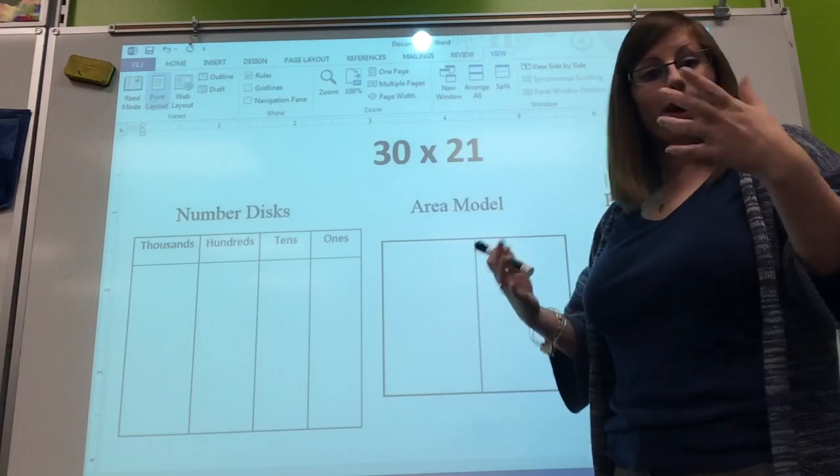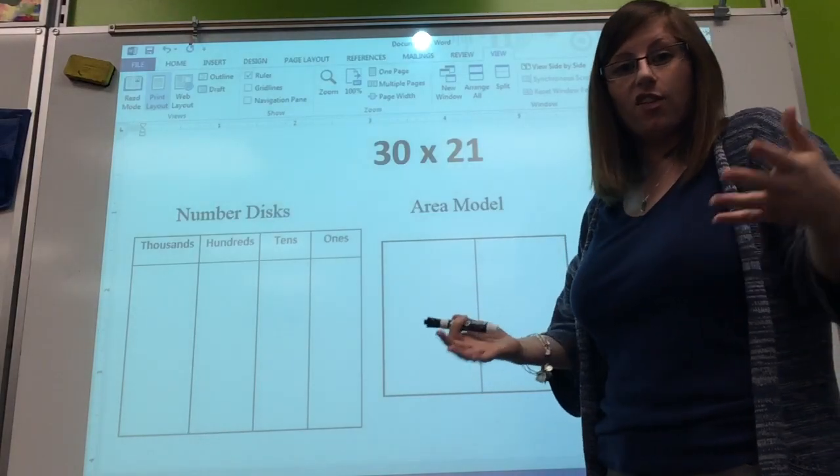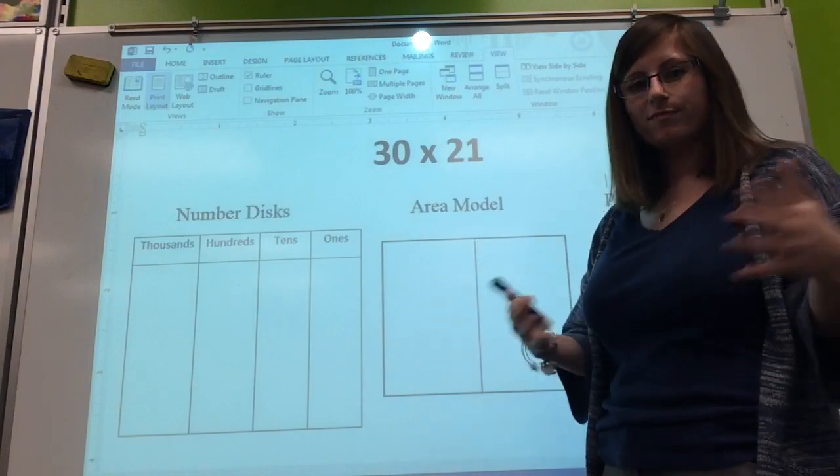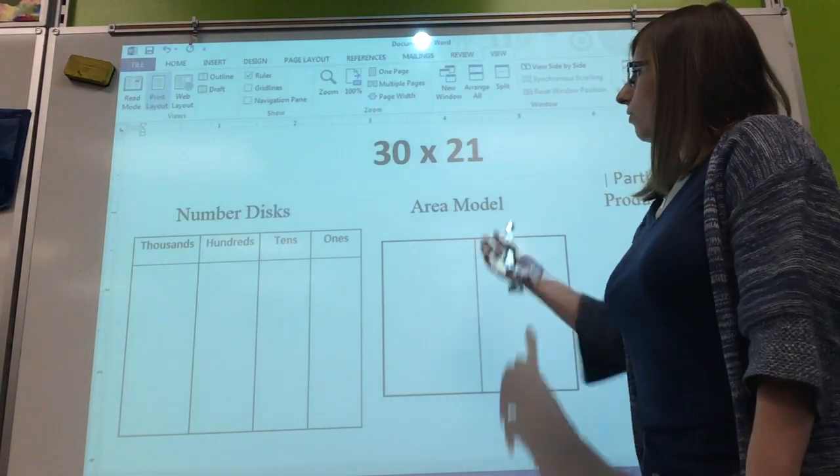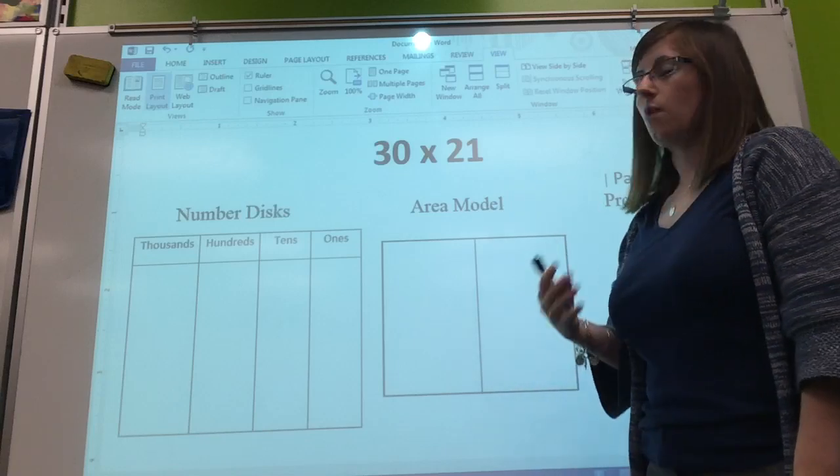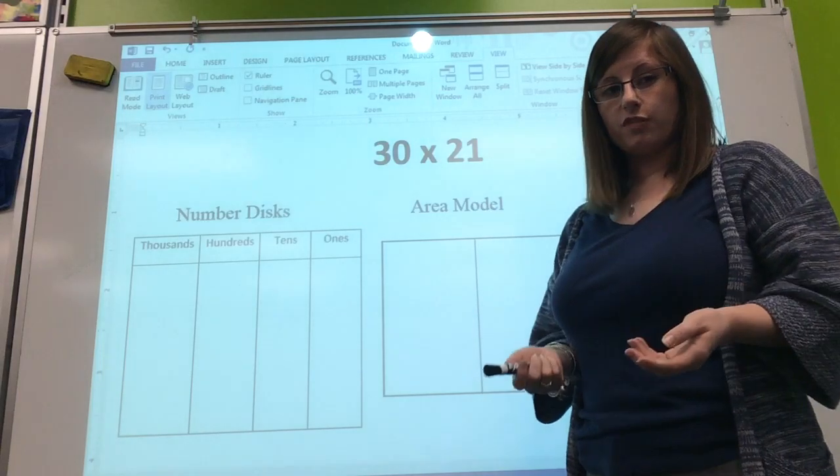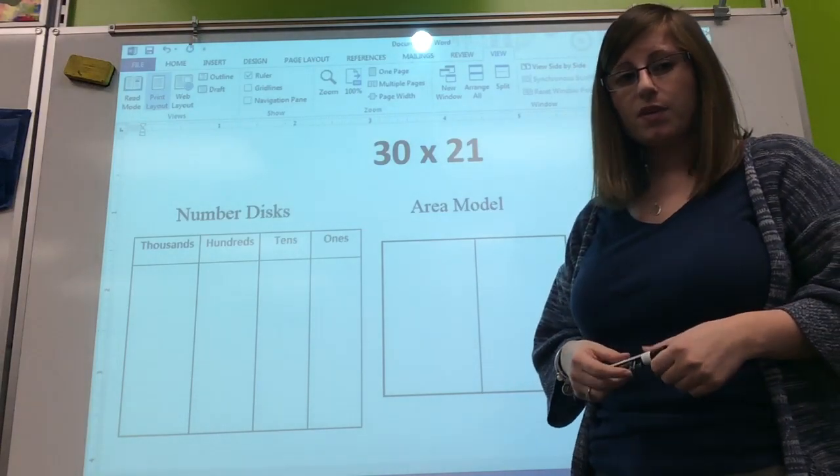We'll do all three - it doesn't take very long and they're all kind of connected, so they play with each other. Our problem is going to be 30 times 21. The first thing that we do is use the associative property.